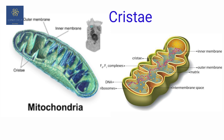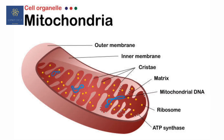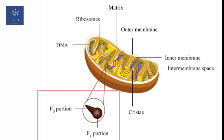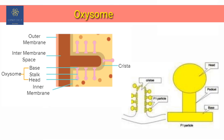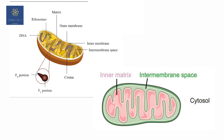The cristae increase the surface area of the inner membrane. The inner membrane contains the respiratory chain proteins. Also present in the inner mitochondrial membrane are F0F1 particles, also known as oxysomes, which have a spherical or knob-like structure. These are also called elementary particles or particles of Fernandez-Morán, and are responsible for catalyzing the final steps of ATP synthesis.